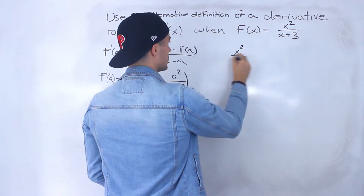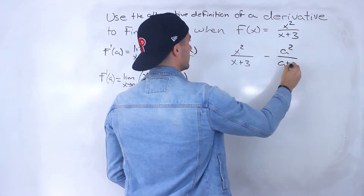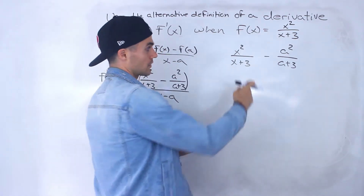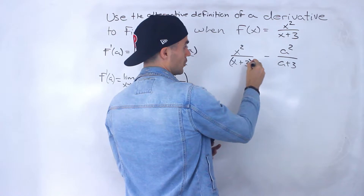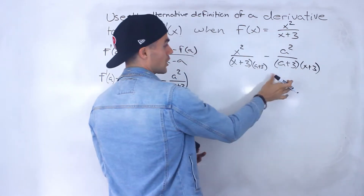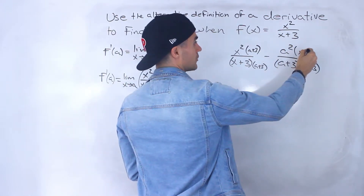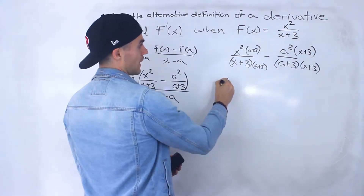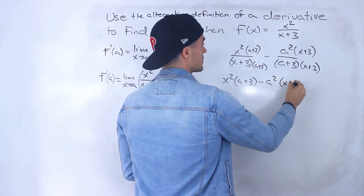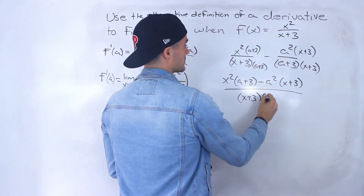We need to combine both fractions that are subtracting into one fraction, so we need a common denominator. We multiply the first fraction by a plus 3 and the second by x plus 3, giving a common denominator. What we do to the bottom we do to the top. So we'll have x squared times a plus 3, minus a squared times x plus 3, all over the common denominator x plus 3 times a plus 3.